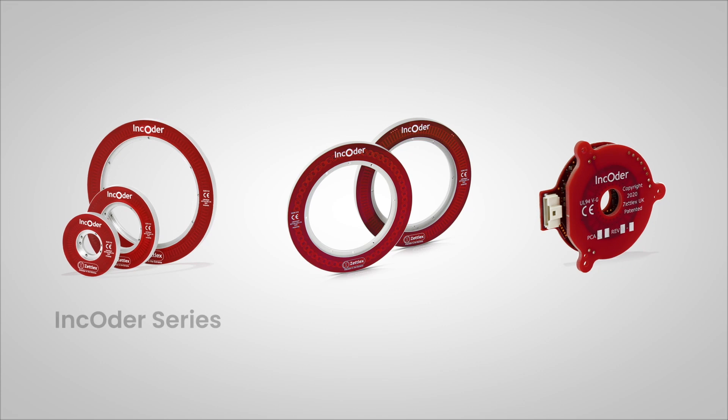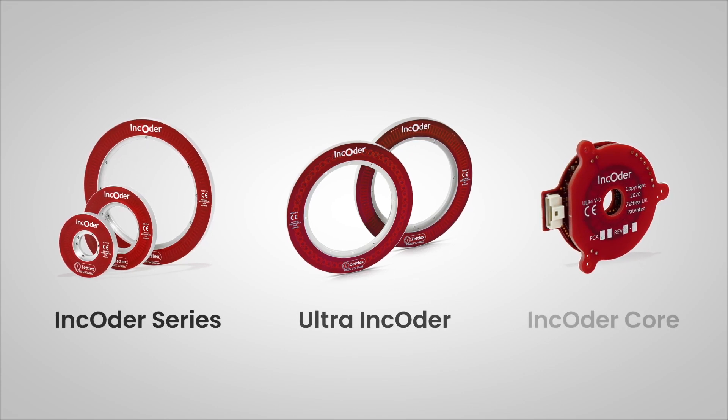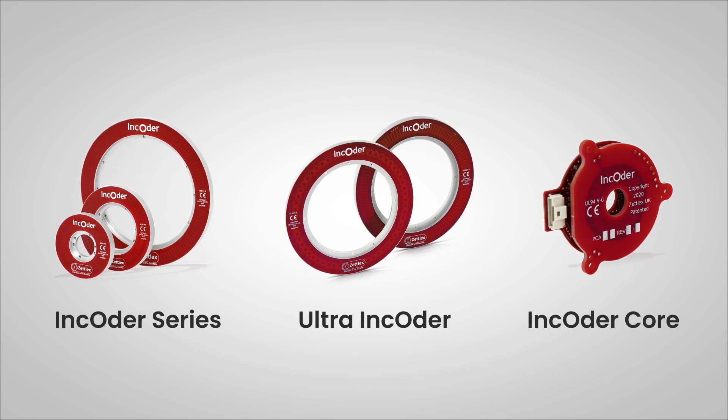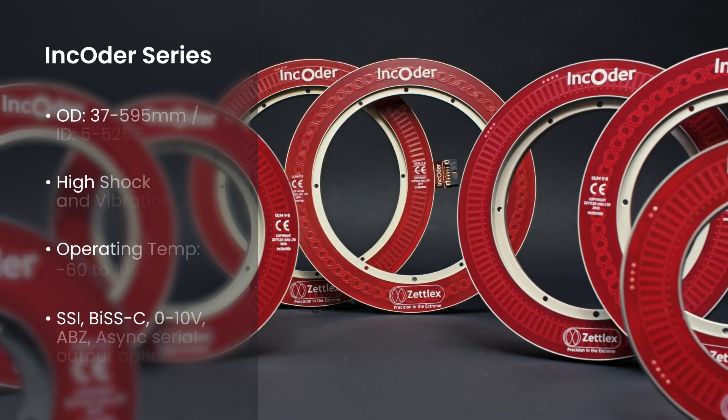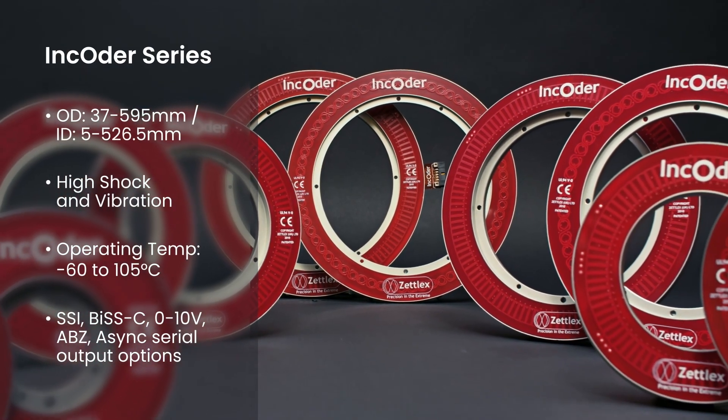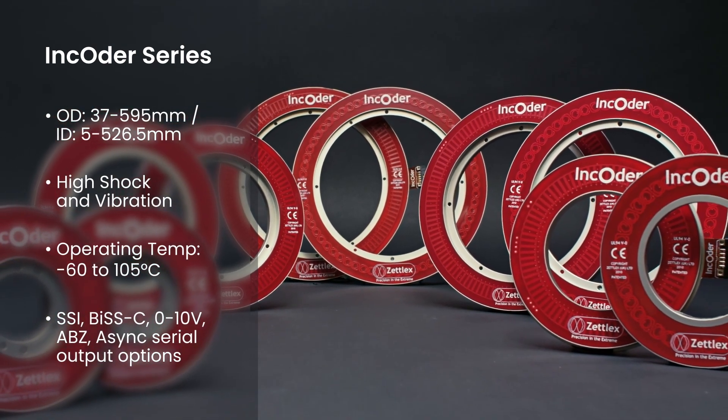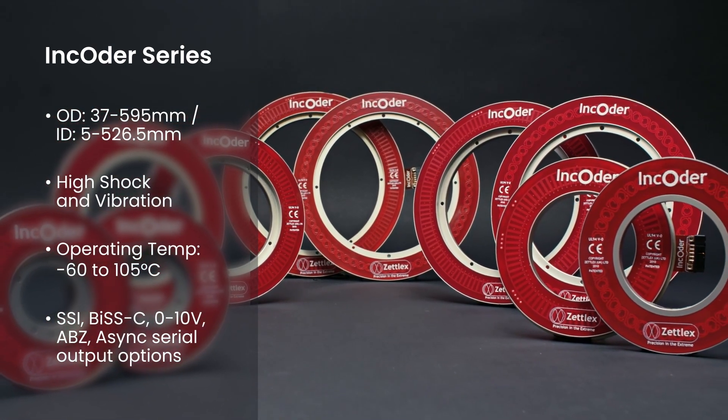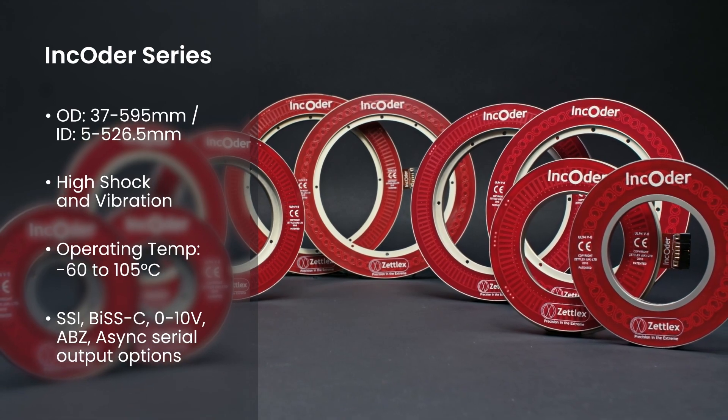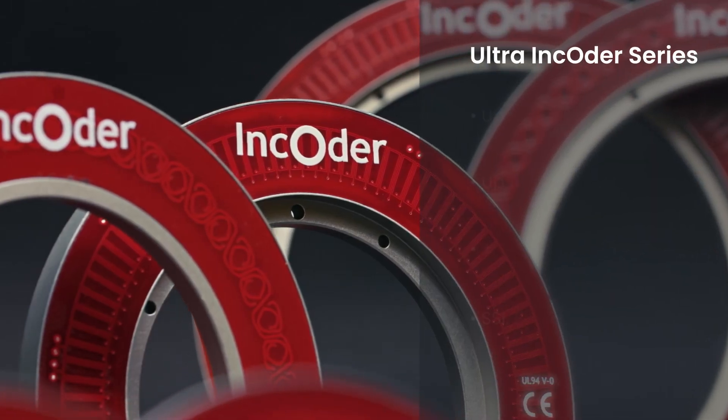Encoder Series is our flagship range of robust and precise inductive angle encoders that offers 37 to 595 millimeter outer diameter, as well as a shafted rotary encoder format. Ultra encoder series offers pre-calibrated encoders with a two times improvement in accuracy, up to 19 arc seconds.